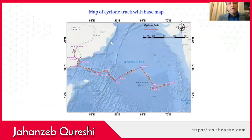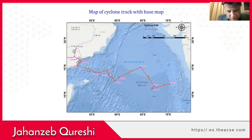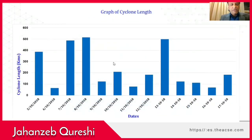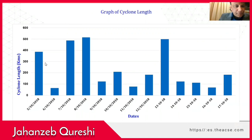This is the map of the cyclone track with the base map, showing the cyclone traveling from one date to another, one point to another. This graph shows the length of the cyclone over the time period — for example, on 5th October 2018 the cyclone length was approximately 400 kilometers, extending through until 17th October 2018.